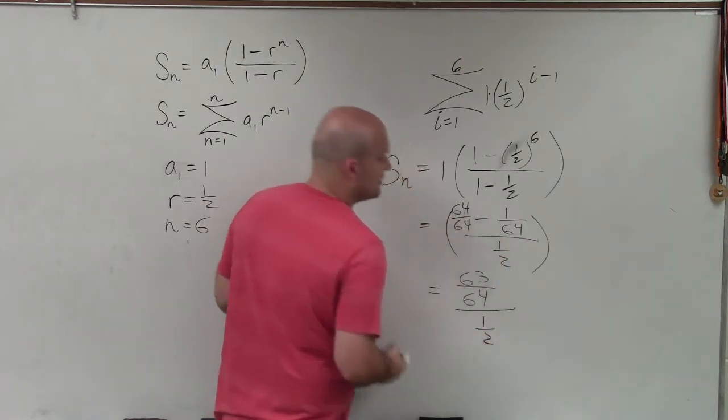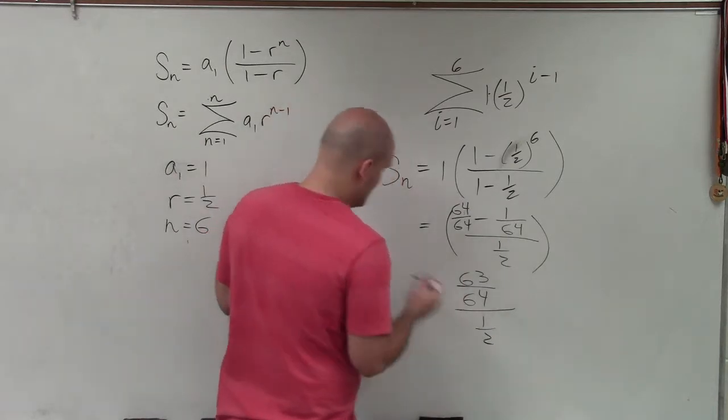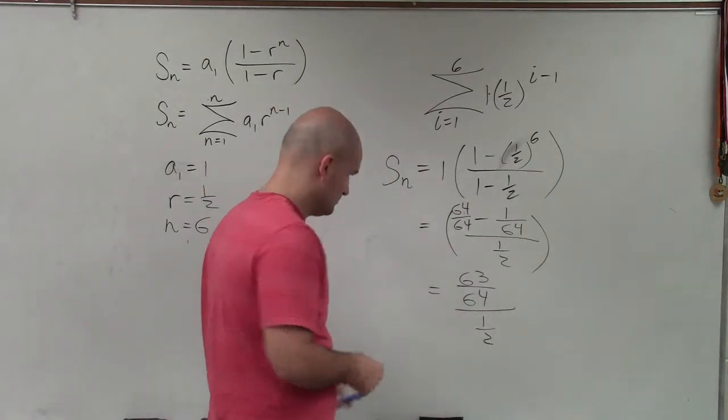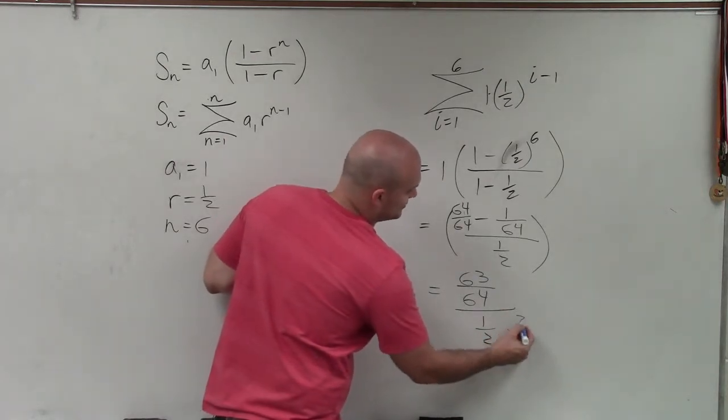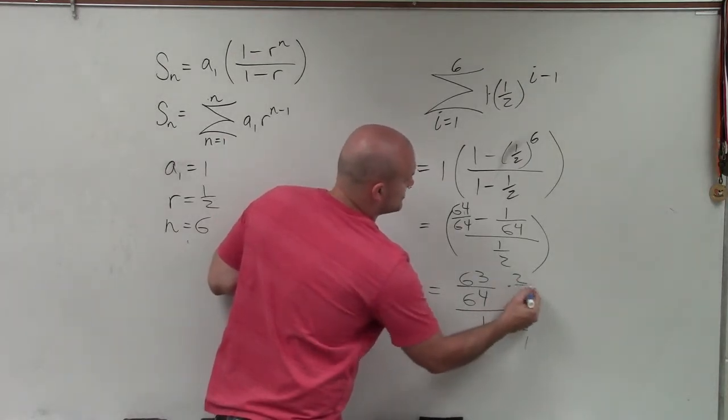Divided by 1 half. Now to get rid of the fractions, I can just multiply by my reciprocal, 2 over 1 times 2 over 1.